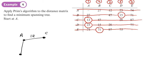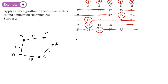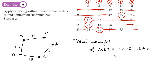Between A and D the weight is 23, so we add that edge. The circled 15 means between B and D it's 15, so we connect B to D with weight 15. The last edge, between B and E, has weight 71. The total weight of the minimum spanning tree is 12 + 23 + 15 + 71, which gives a total weight of 121.